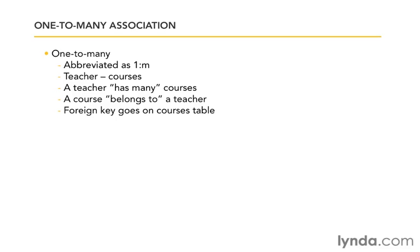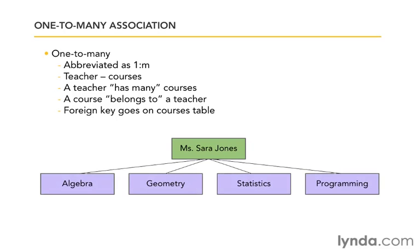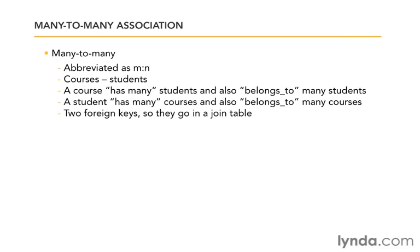Let's take a look at the one-to-many association. A good example of this would be that a teacher teaches several courses — we said each teacher has four courses a day. So a teacher has many courses, and each course belongs to a teacher. Therefore, the foreign key is going to go on the courses table. A diagram might look like this.